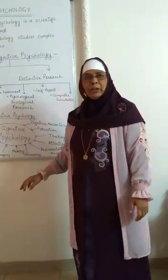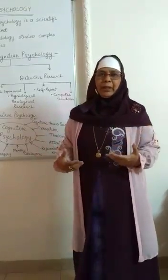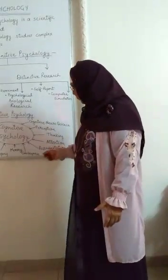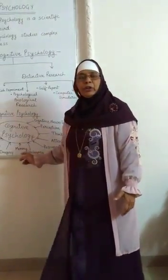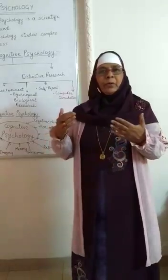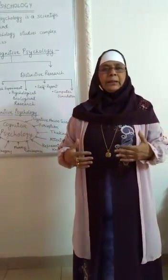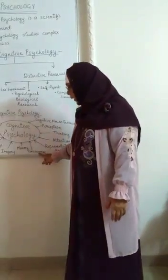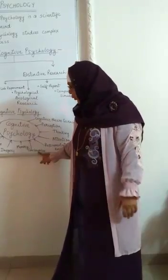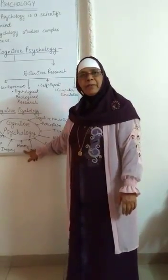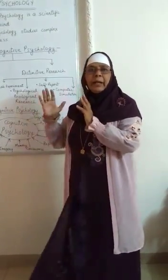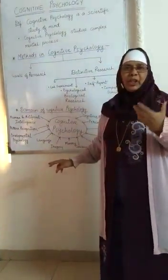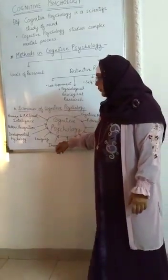Representation of knowledge — whatever information we are taking in and learning, we represent our knowledge in a positive way. Then consciousness — consciously we are learning certain things, consciously we are representing certain things, and we are aware about many things in the present situation. Memory — whatever we are learning, we try to store it in our memory. Imagery — images and imagination are also a concern of cognitive psychology.